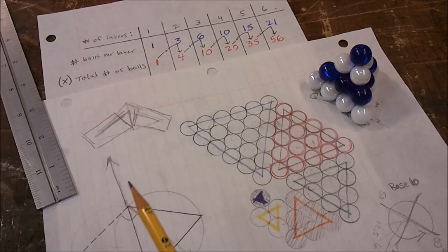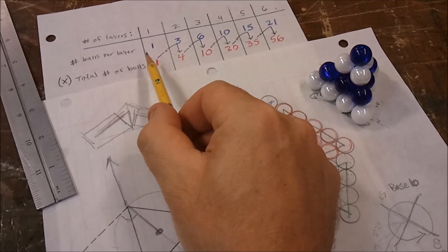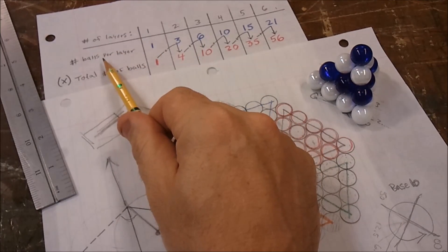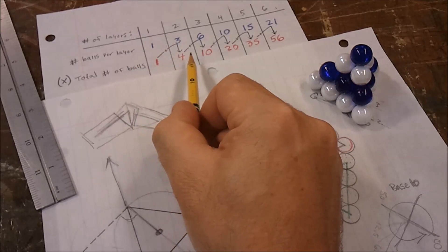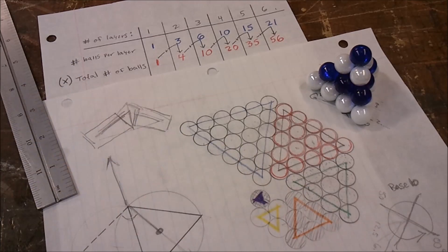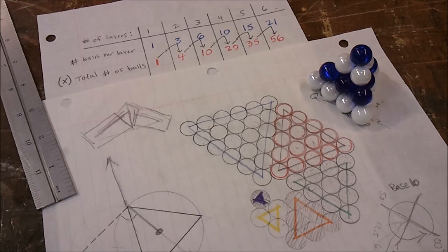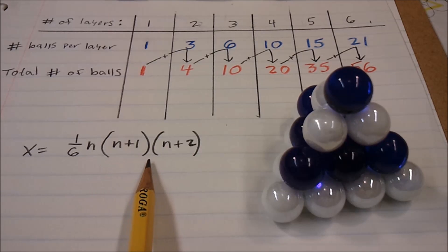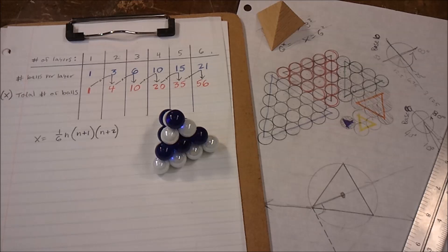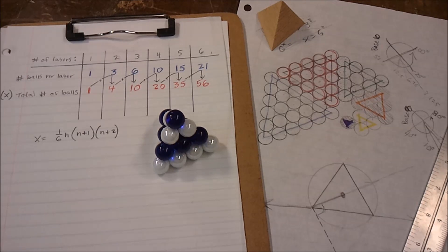As with all mathematics, there are patterns that start to emerge. This generates two sets of numbers: the first is how many balls are in that layer, and the second is the total number of balls in a pyramid however many layers high. This equation tells us how many marbles we need to make a puzzle with four layers. Of course you could just count, but this has interesting application to other puzzles. This is a case where the algebra is simple enough that you shouldn't be avoiding it.